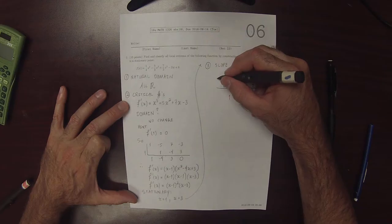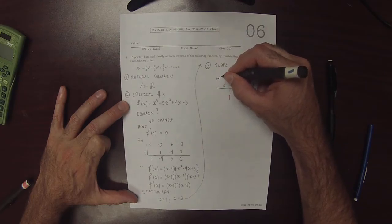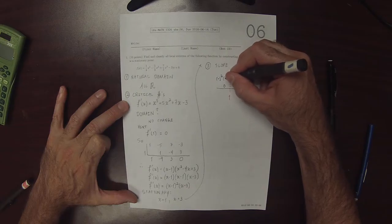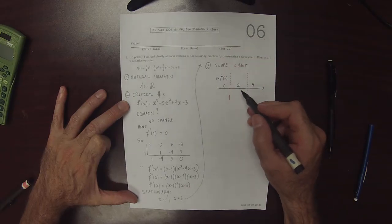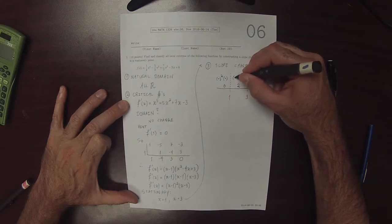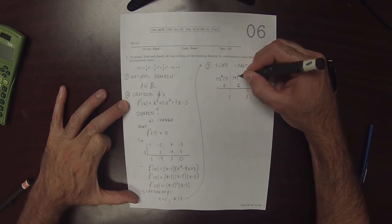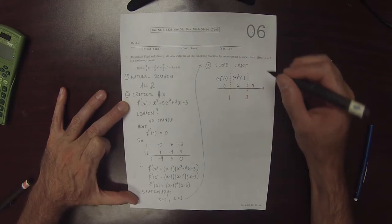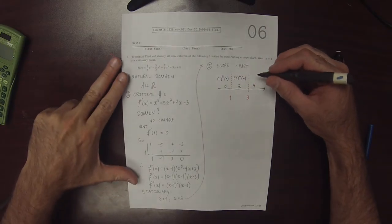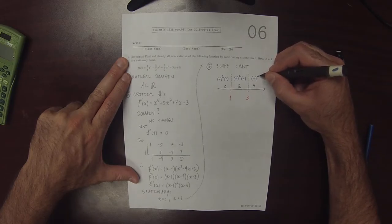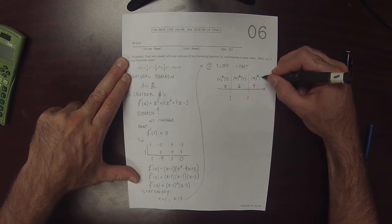So when we plug in 0, we get negative squared, multiplied by negative. When we plug in 2, we get positive squared, multiplied by negative. And when we plug in 4, we get positive squared, multiplied by positive.